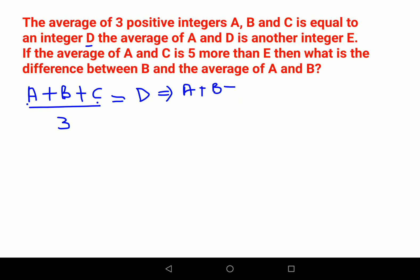Now they have said the average of A and D equals another integer E. So (A+D)/2 = E. Basically, I can say A+D = 2E.